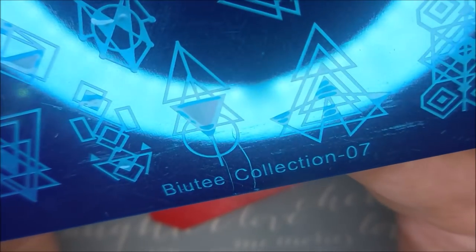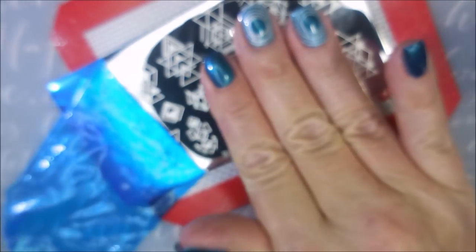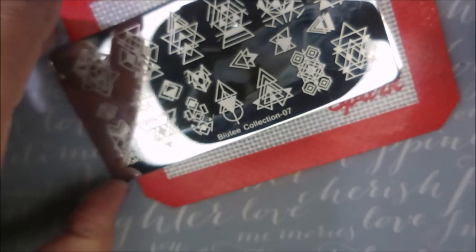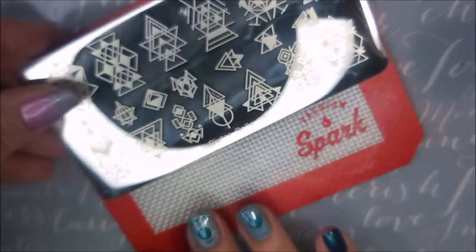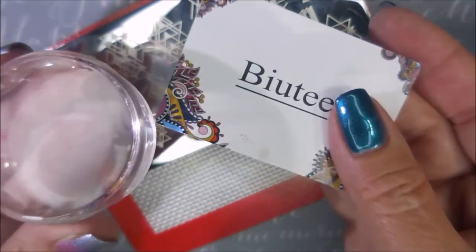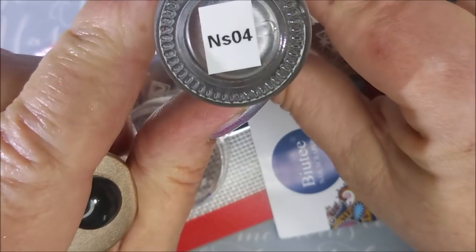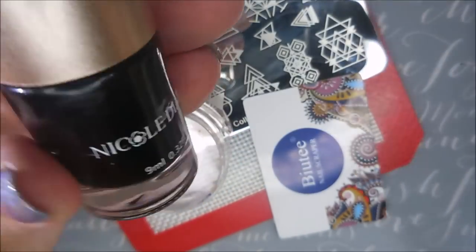I'll be using this Beauty Collection 07 plate today. I am stepping out of my comfort zone and going to play with some of these more geometric designs. I know I'm a swirly twirly girl but I know I need to do this so I'll be using my monocle stammer and the stamper and the Beauty scraper. NSO4 silver and NSO2 black from Nicole Diary.